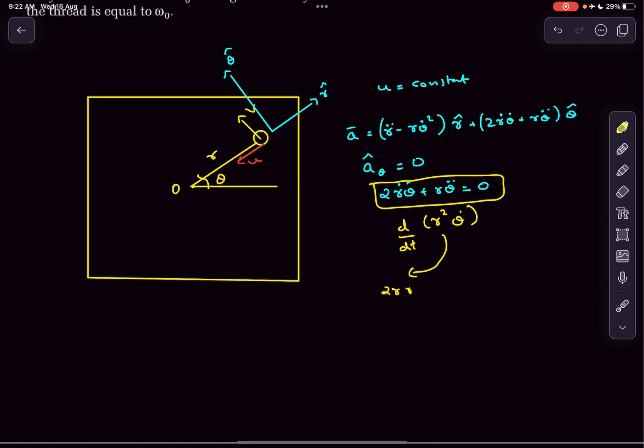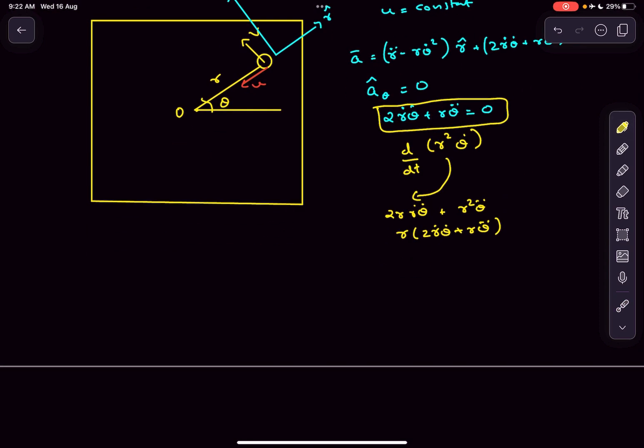This would be 2r r dot theta dot plus r square theta double dot. If you take r outside you get 2r dot theta dot plus r theta double dot, which is the a theta cap expression. So we can replace this with that expression.